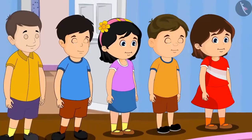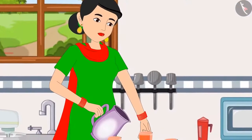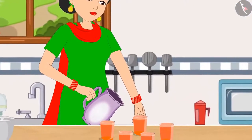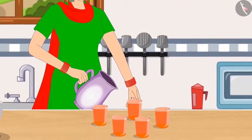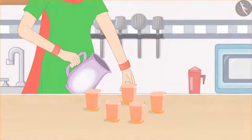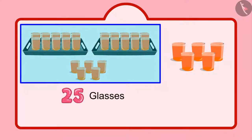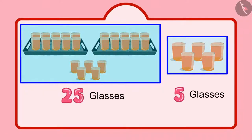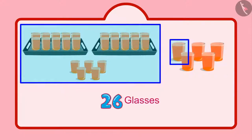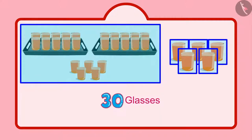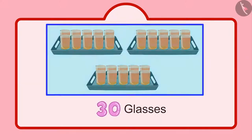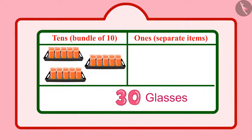After some time, some more friends of Chotu came home, and Chotu's mother made more sherbet for them. Chotu had already distributed 25 glasses, and after that 5 more glasses were added, making it 26, 27, 28, 29, 30. That means 30 glasses. So children, in 30, there are 3 tens and 0 units.